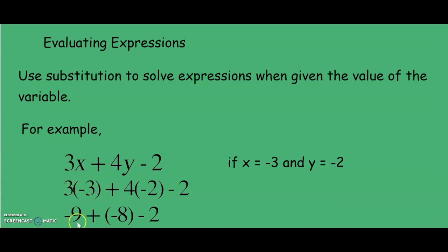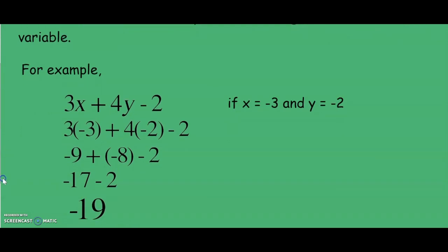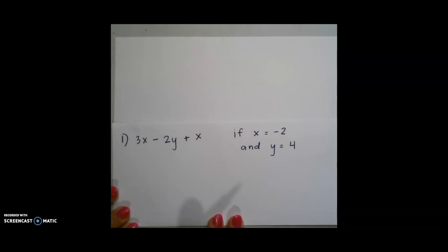So 3 times negative 3 is negative 9, 4 times negative 2 is negative 8, and we bring down the minus 2. Next, we go in order from left to right because we have both addition and subtraction. Negative 9 plus negative 8 is negative 17, and negative 17 minus 2 will give us a final answer of negative 19.